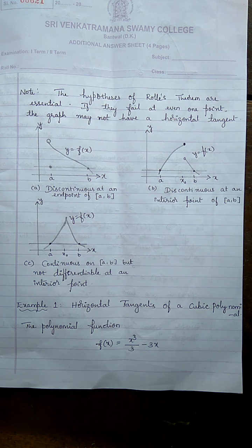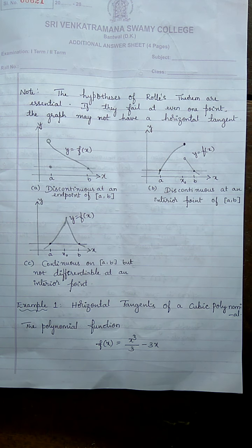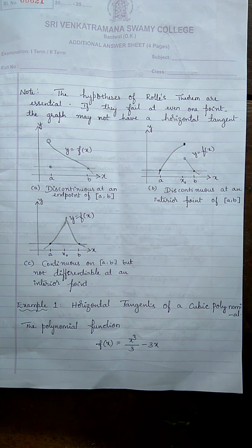Dear students, in the previous class we were discussing Rolle's theorem. The statement was: suppose y = f(x) is continuous at every point of the closed interval [a, b] and differentiable at every point of its interior (a, b). If f(a) = f(b), then there is at least one number c in (a, b) at which f'(c) = 0. That is the statement of Rolle's theorem.